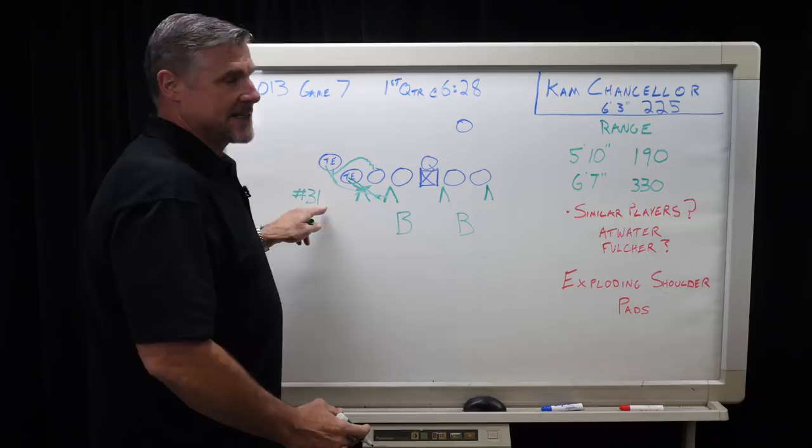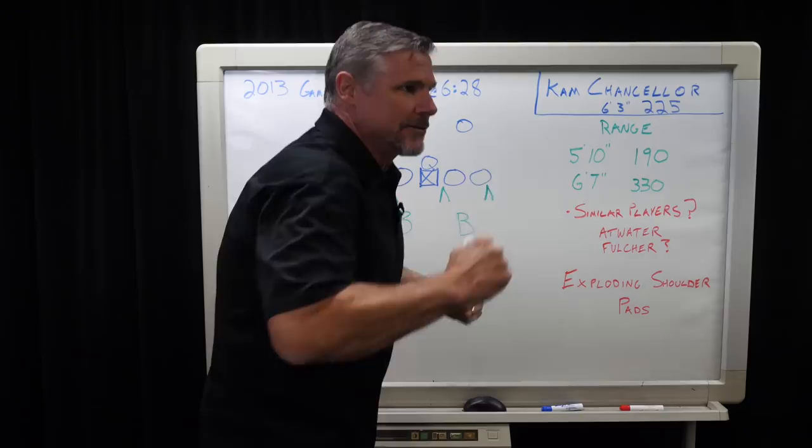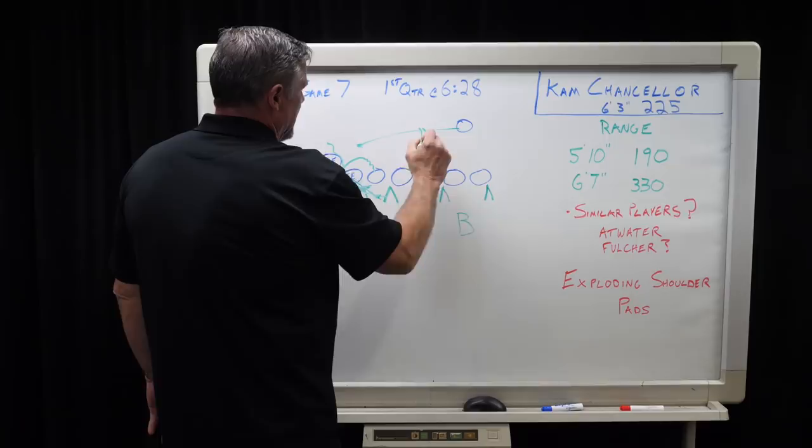And they thought they had the advantage here, but Cam comes up. And if you see on the film, he kind of stands in there. And then at the last second, he sort of rolls his hips, but he has enough force to just entirely destroy Eric Winston. He ends up falling backwards. And not only that, because the play comes this way, he makes the tackle as well.